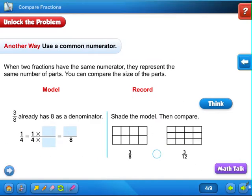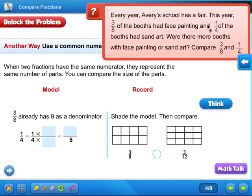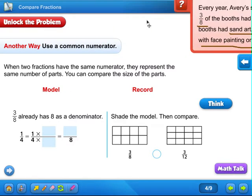Next, we're going to try it with a common numerator. Again, were there more booths with face painting or sand art? We know that one fourth was sand art and three eighths was face painting. Another way is to use a common numerator. When two fractions have the same numerator, they represent the same number of parts. You can compare the size of the parts.